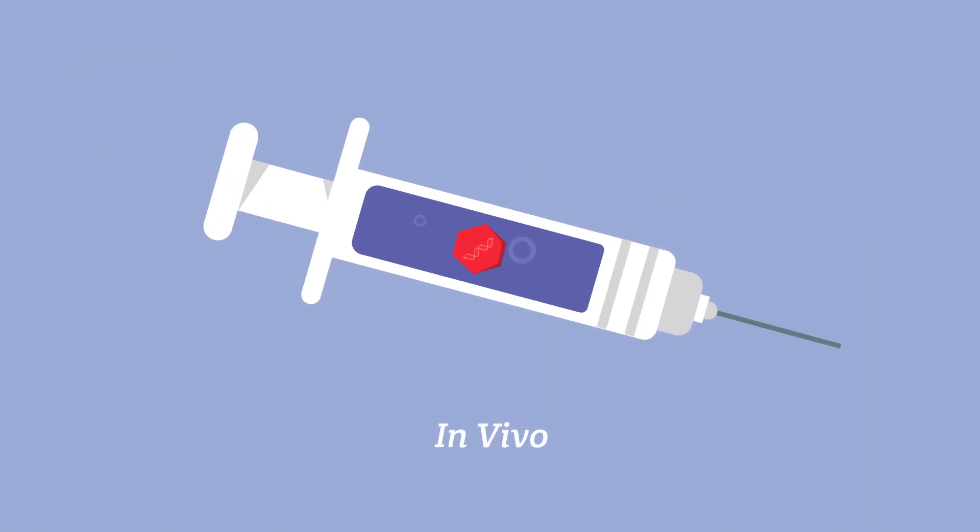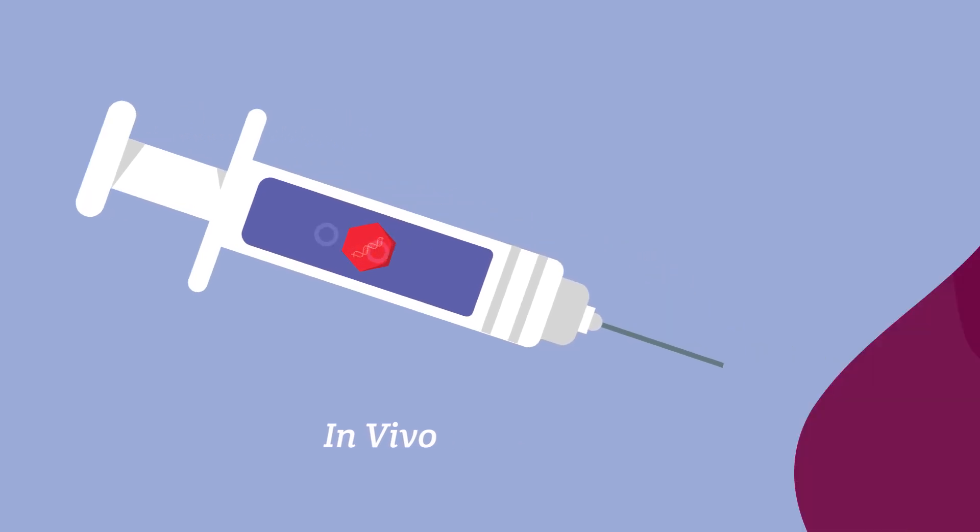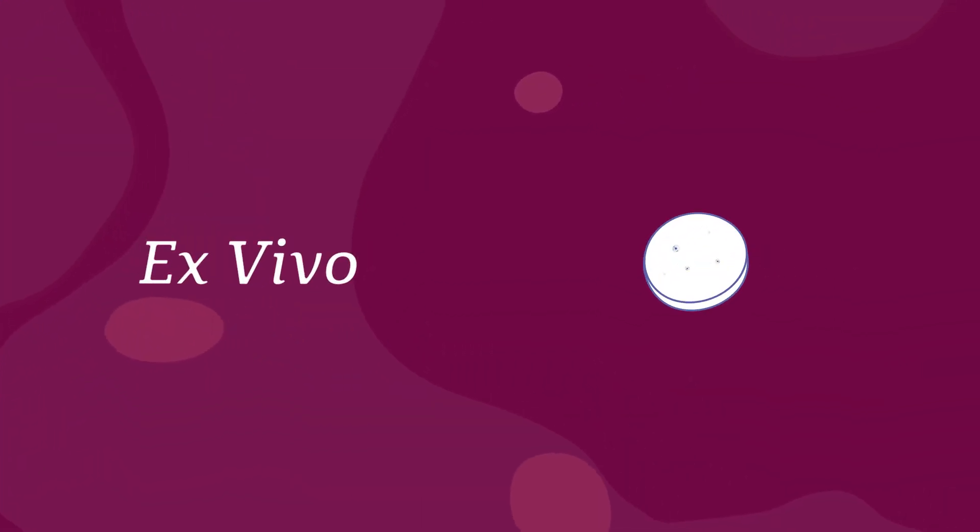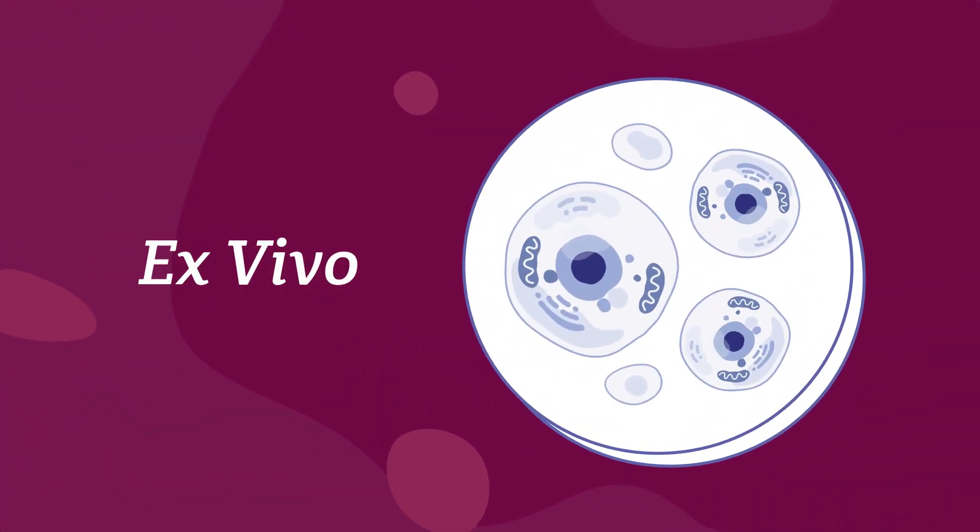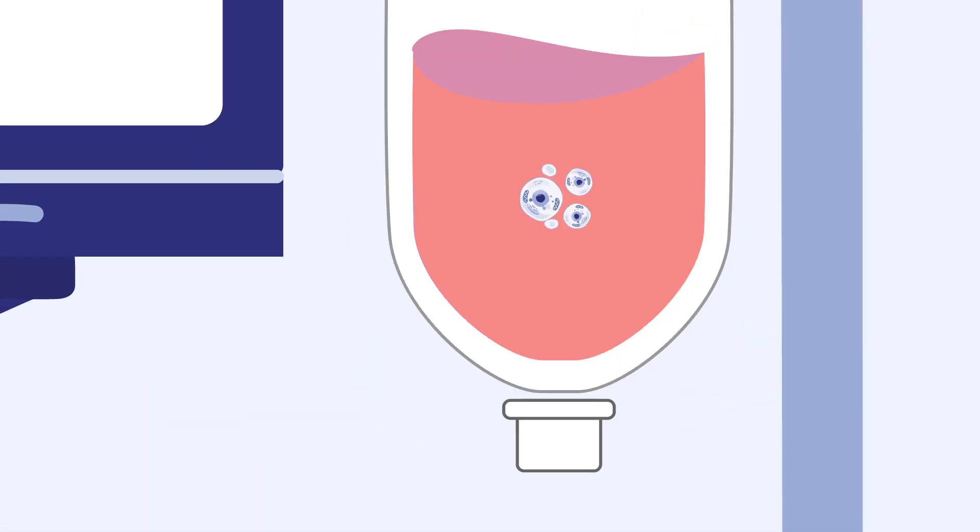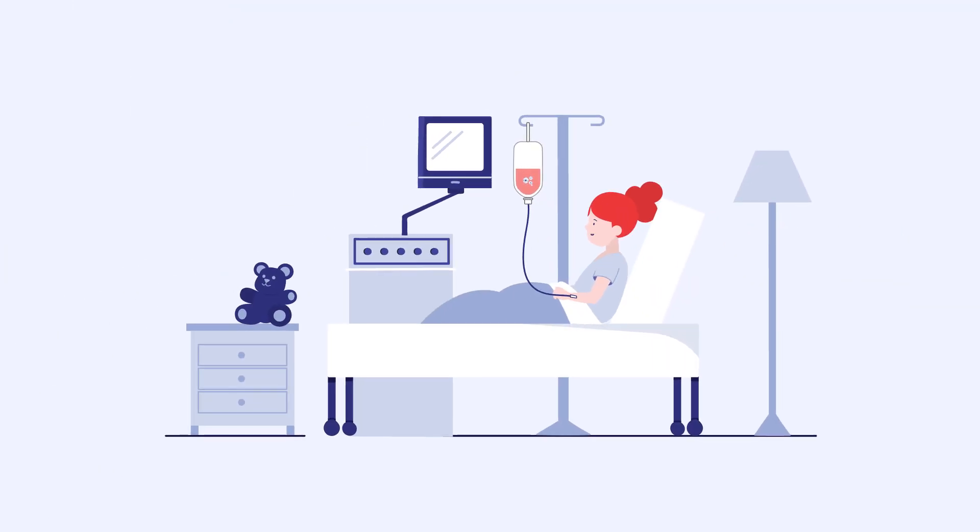In vivo means the gene editing components are delivered directly into the body to make edits within the cells. While ex vivo means the cells are first removed from the patient and then edited in a specialized laboratory and returned back to the patient's body.